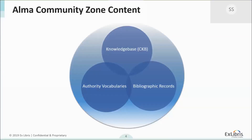Here is an overview of the different kinds of content in the Community Zone. I think of it as having three main parts that are all interconnected and work best together when they are all full. The central knowledge base, or CKB, is where the information about electronic collections live — the electronic portfolios tightly integrated with the link resolver and full text linking. That really works best together when we have full bibliographic records, which are then tied to our authority vocabularies of rich subject and name information.